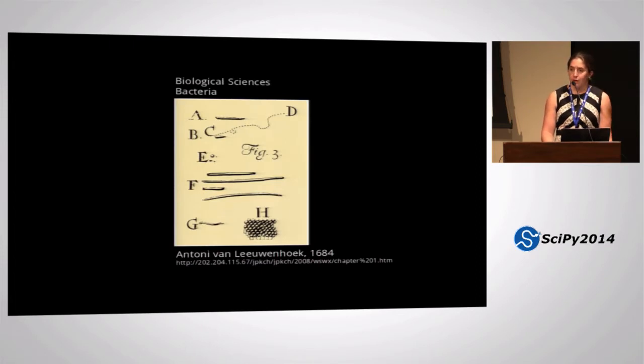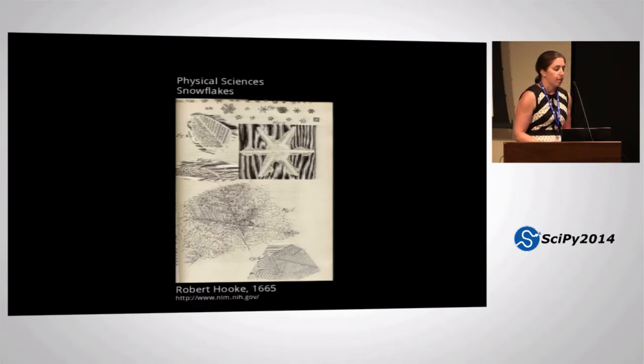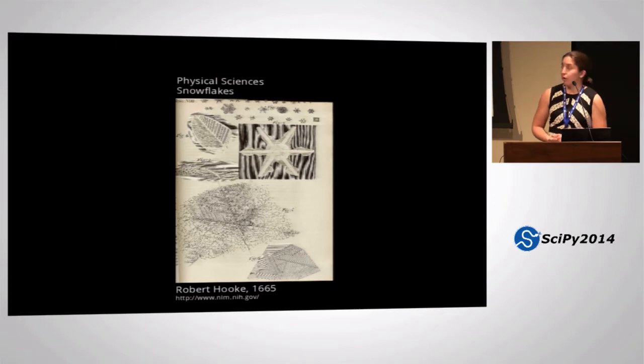Going back to the father of microscopy, he discovered bacteria in a sample when there was no concept of bacteria, but he could still look at that sample and describe what he saw, draw it, include the dotted line to show a little bit of motion. And also in the physical sciences, this figure really intrigues me because Hook is showing the snowflake at various different levels of magnification and still using the same drawing technique to tell you about this sample that he's observing.